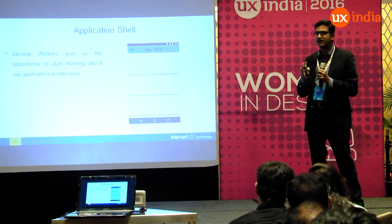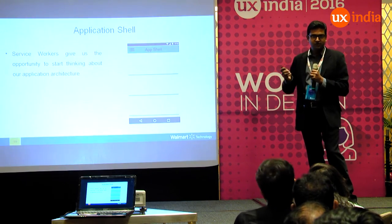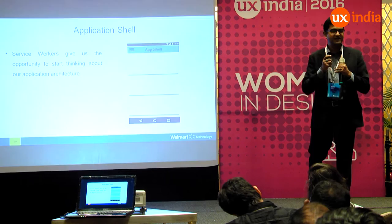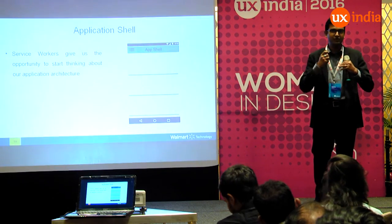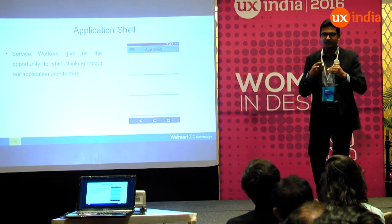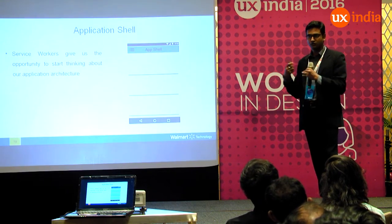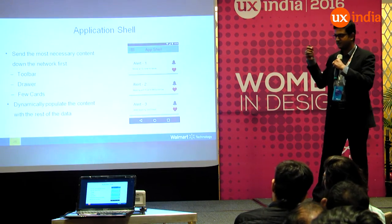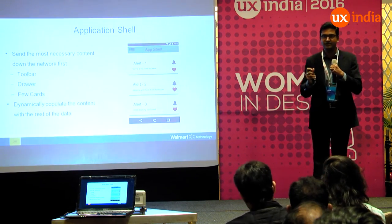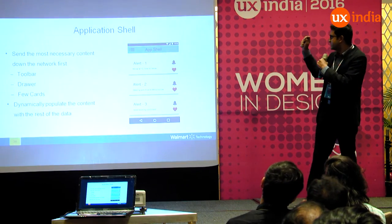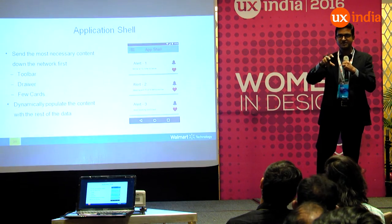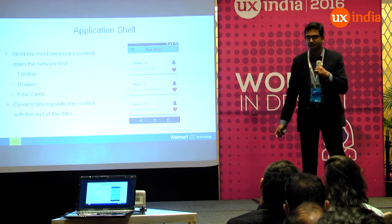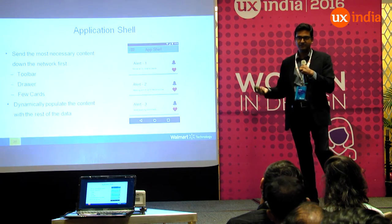Service workers give us an opportunity to rethink how our applications are made. Take a step back before getting into architecture. Think about what kind of application you are making. If your app is data-centric with a lot of data the user needs at all times, rethink your approach. Application shell architecture means sending the most necessary content — toolbar, drawers, key cards — down to the network first so users see content as quickly as possible, then dynamically populating the rest.